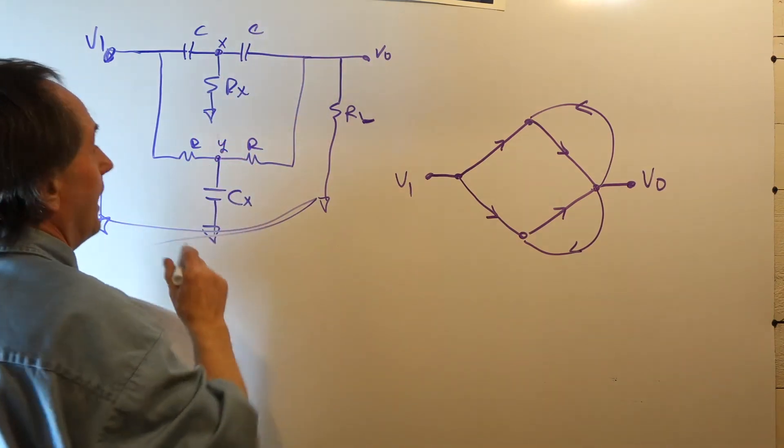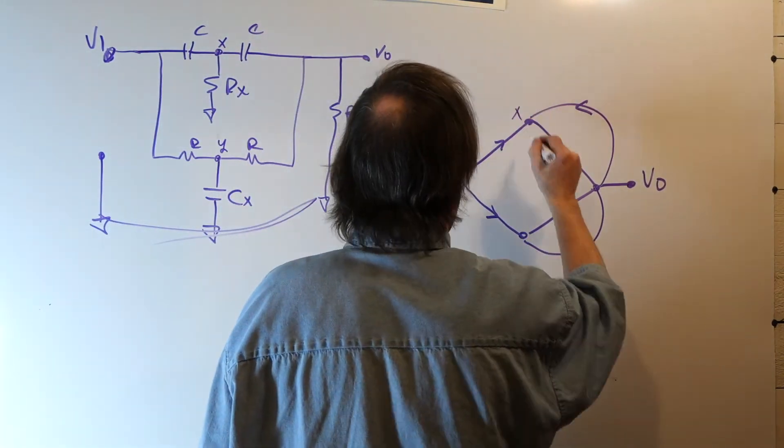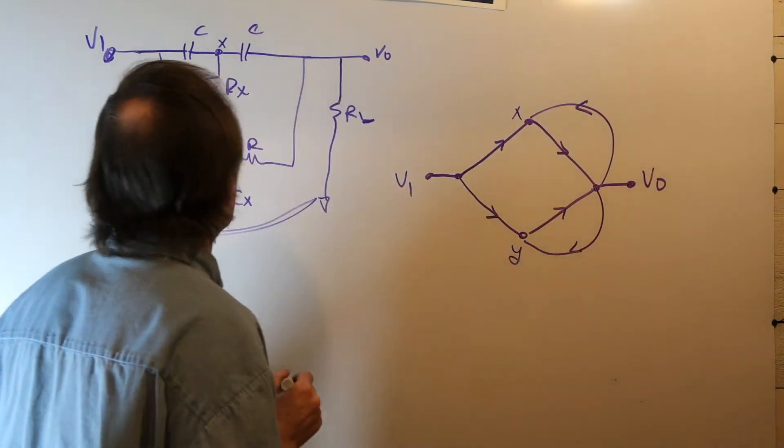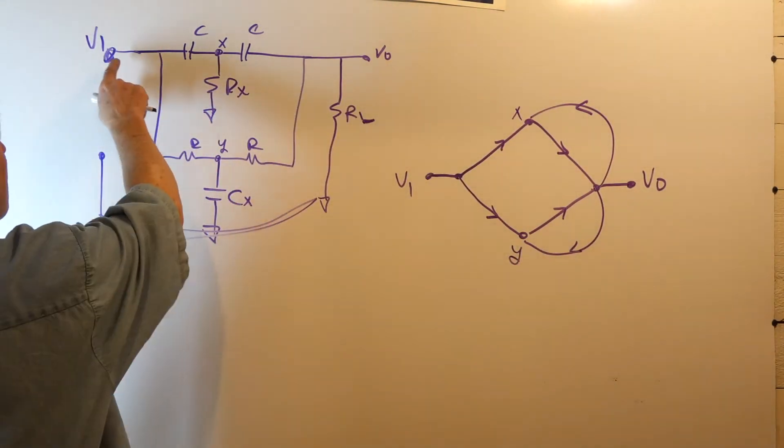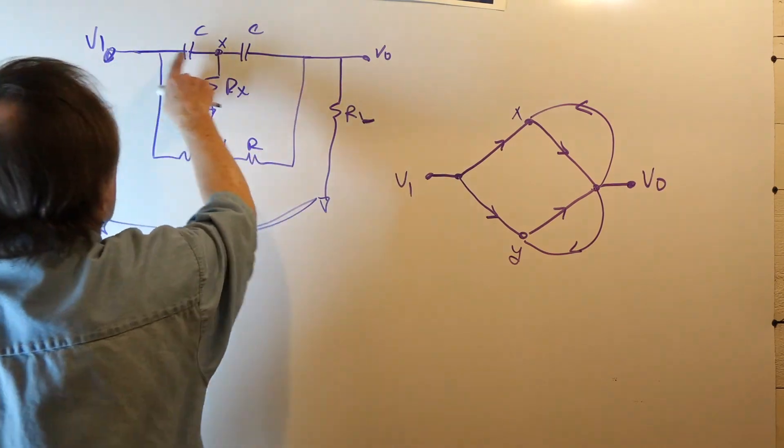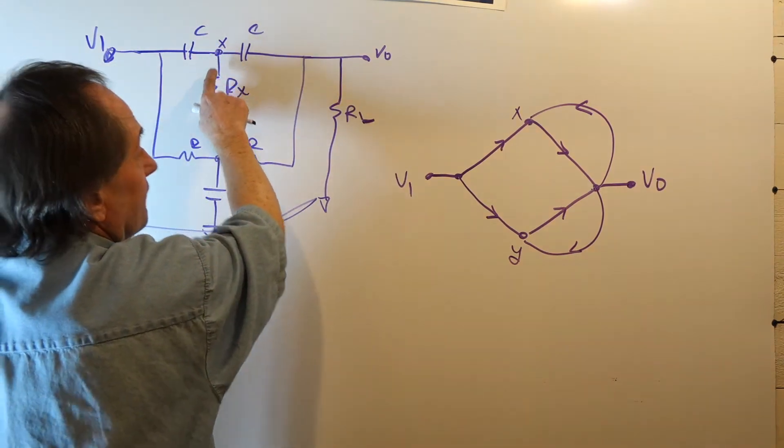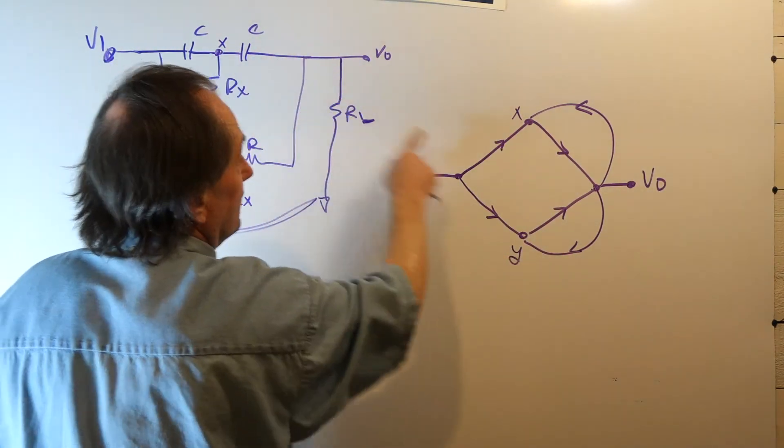What we're looking at here is this is node X. Say, this is node Y. So, this is our node X. This is our node Y. So, you can kind of see the graph there. From V1 to X, we're going through a capacitor. From X to Vout, we're going through another capacitor.